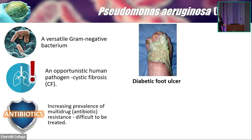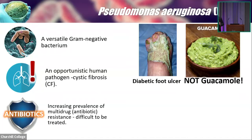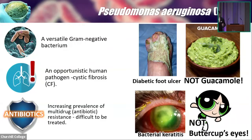For example, look at this. This is a patient with diabetes. You can see this green slimy thing on it — it is actually caused by Pseudomonas aeruginosa, and it is not guacamole. And this is the patient with bacterial keratitis with a green eye. It is caused by Pseudomonas aeruginosa as well. And this is not the eye of a butter cup.